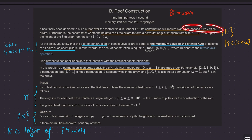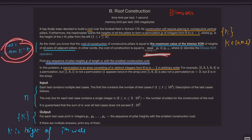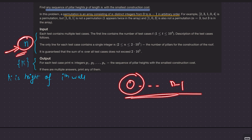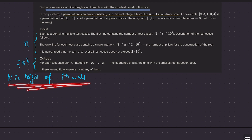So all in all, we have to place n vertical pillars, and their heights should form a permutation — an array consisting of n distinct integers from 0 to n minus 1 in any arbitrary order. The construction cost is the maximum of pairwise adjacent XORs, and we want to minimize it. In the input you have n, and the output must be a permutation where P_i is the height of the i-th wall.